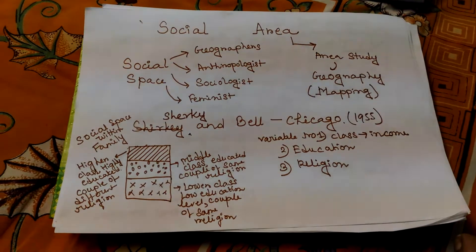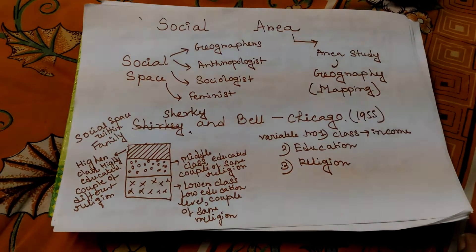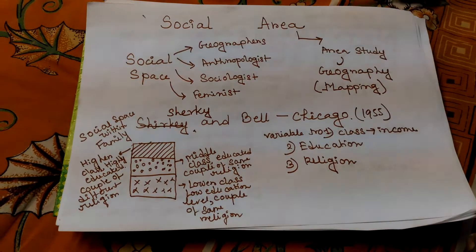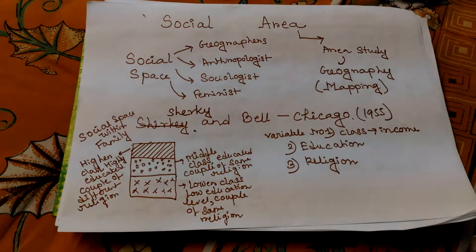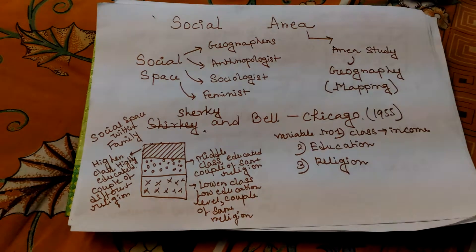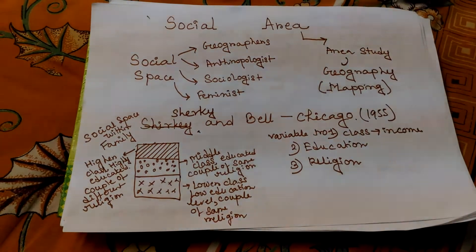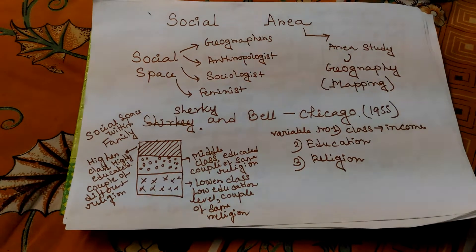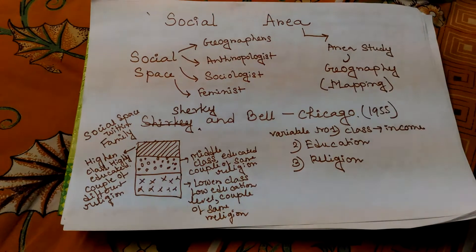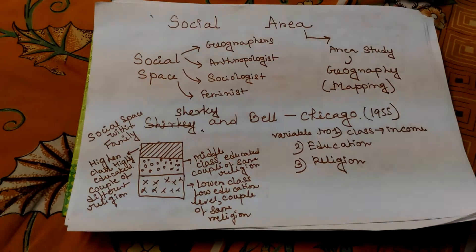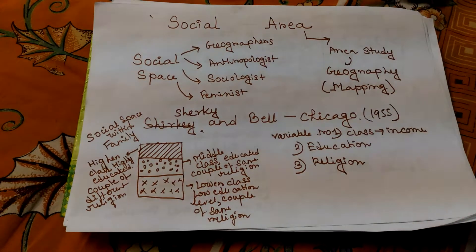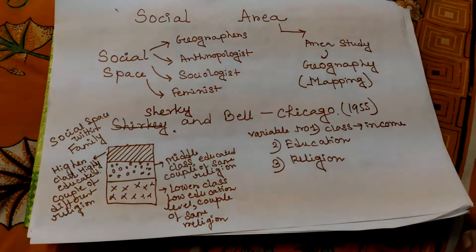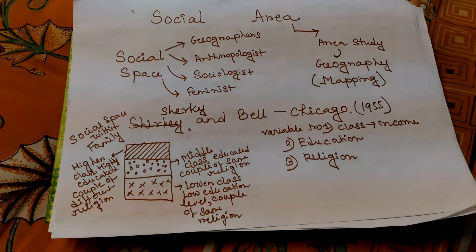Good afternoon friends. Today I am talking about a very interesting lesson of geography, mainly at the graduation level. Social area analysis is a very important topic for all students of different universities. It is a very interesting topic, but before that we have to understand social space. Social area analysis was introduced by Shevky and Bell in the year 1955, and the analysis was first done in the context of Chicago.